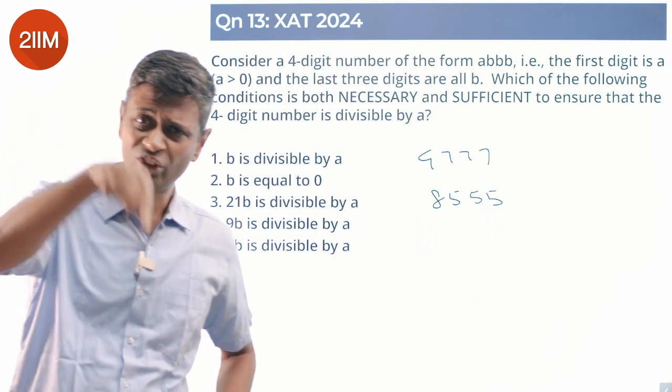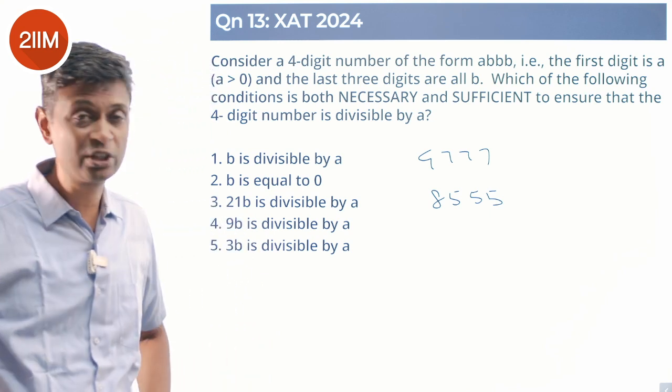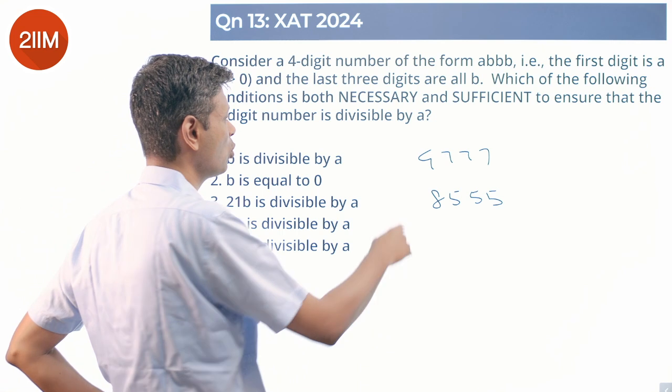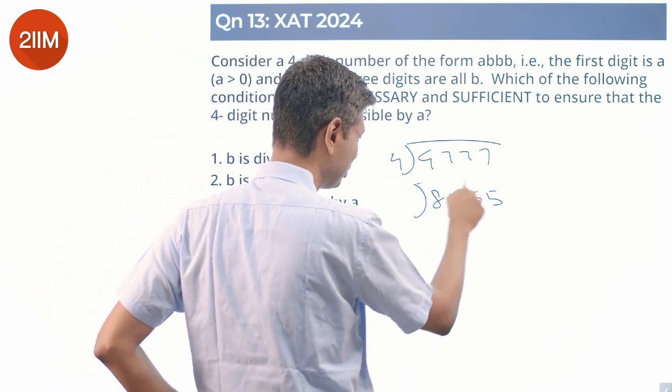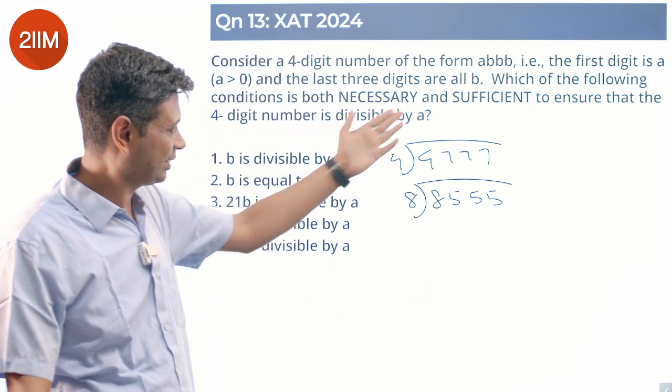Which of the following conditions is both necessary and sufficient to ensure that the four digit number is divisible by A? 4 triple 7 is divisible by 4. 8 triple 5 is divisible by 8. And so this case it is not.